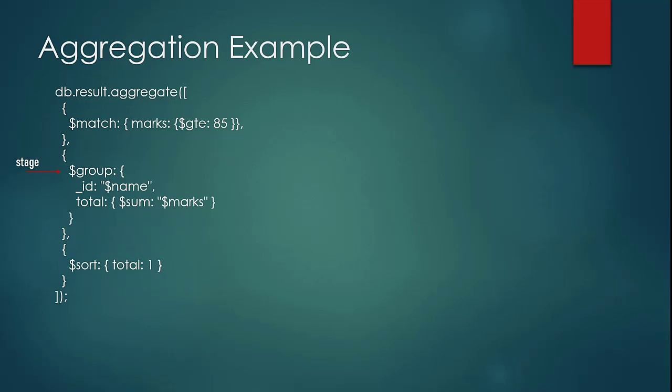You would also see some fields annotated with a dollar sign — those are known as expressions. There are also some other fields with a dollar sign whose purpose is to run some commands on your database, and those are known as accumulators. Combined, these make up your aggregation query.